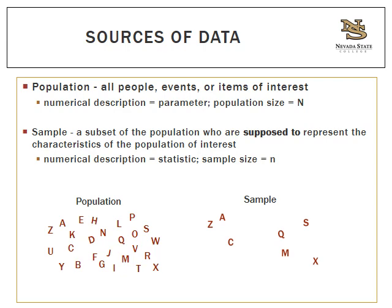Let's start with the two major sources of data. Most broadly speaking, you can have data that comes from a population — that's called a census — or data that comes from a sample, called sample data. Data from a population means you have all the information from everybody or everything you're interested in examining, all people, events, or items of interest. That would be a population.